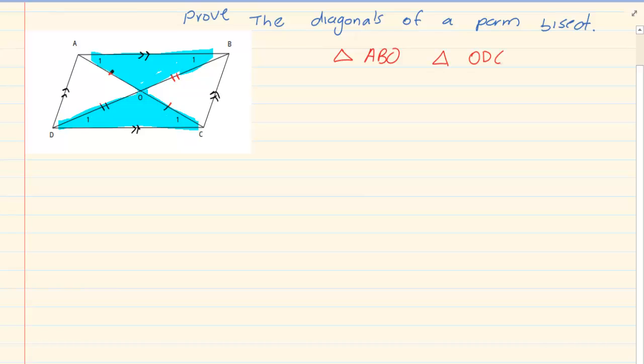you have that AB is equal to DC. Why? AB is equal to DC because the opposite sides of a parallelogram are equal.